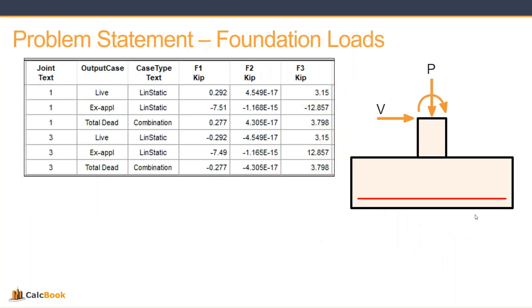If we take a look at our reactions from the model, this is an output looking at joint 1 and joint 3 which are the base of each column. We have F1 (lateral, X direction), F2 (out of plane, no force), and F3 (vertical). We have loads for live, EX which is our earthquake lateral, and total dead load. These are separated so we can run both ASD and LRFD load combinations.